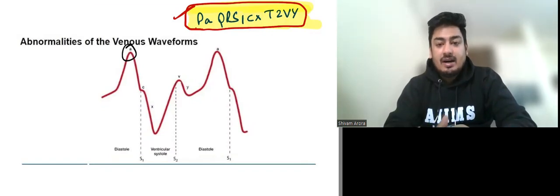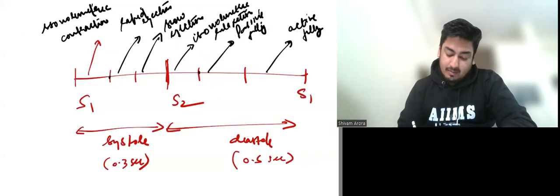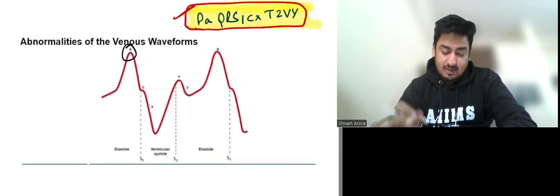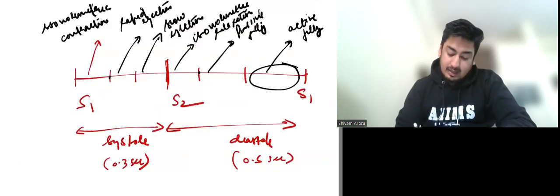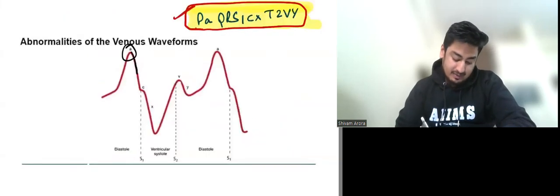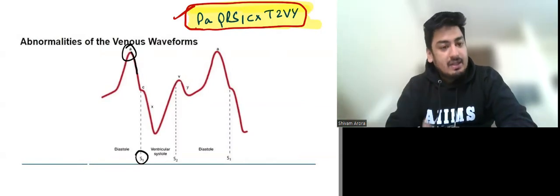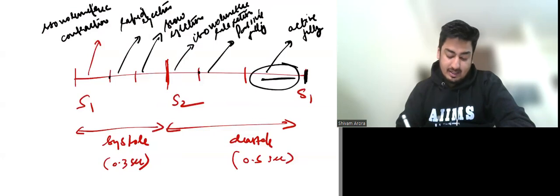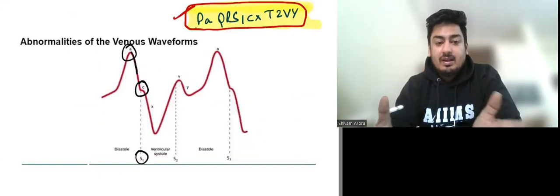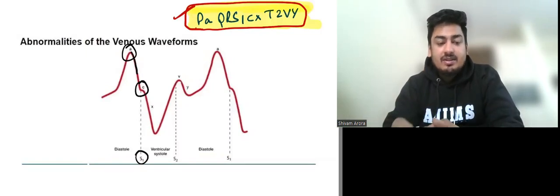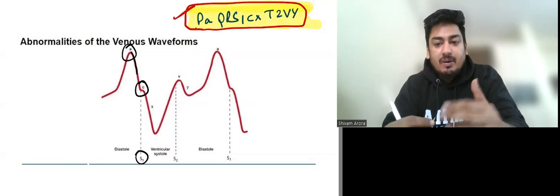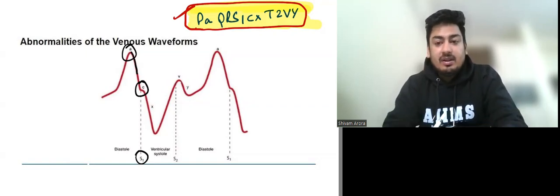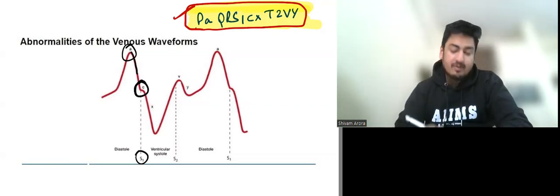Now let us discuss the JVP waveform. The first wave is the 'a' wave, which is because of right atrial contraction. When the atria contract and then start relaxing, pressure drops. The 'a' wave comes before S1. After S1, systole starts. During isovolumetric contraction, the tricuspid valve bulges into the RA, causing a slight increase in RA pressure, which is represented as the 'c' wave or c-notch.